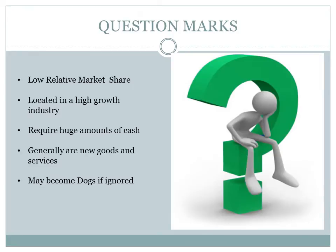Question Marks represent business units having low relative market share and located in a high-growth industry. For example, a brewer's garage — small market share, but big demand for car repairs and car safety checkups. They require a huge amount of cash to maintain or gain market share and require attention to determine if the venture can be viable. Question marks are generally new goods and services which have a good commercial perspective. There is no specific strategy which can be adopted; if the firm thinks it has dominant market share, it can adopt an expansion strategy, otherwise a retention strategy can be adopted. Most businesses start as question marks as the company tries to enter a high-growth market. If ignored, question marks may become dogs, while if huge investment is made, they have the potential of becoming stars.